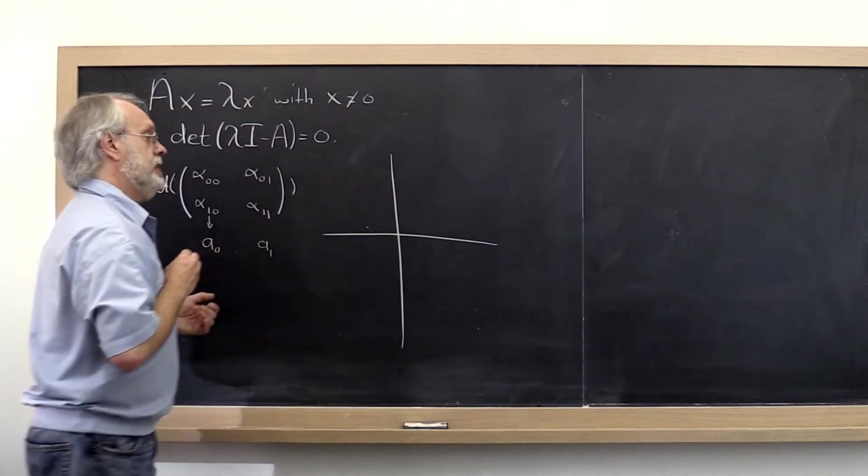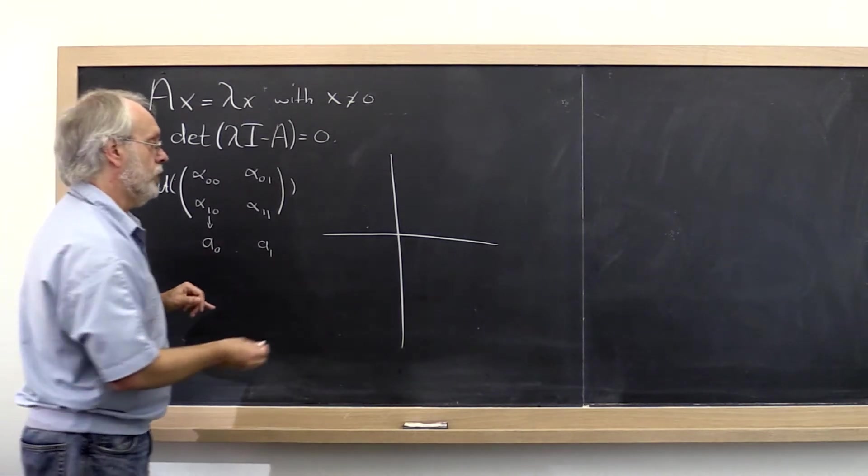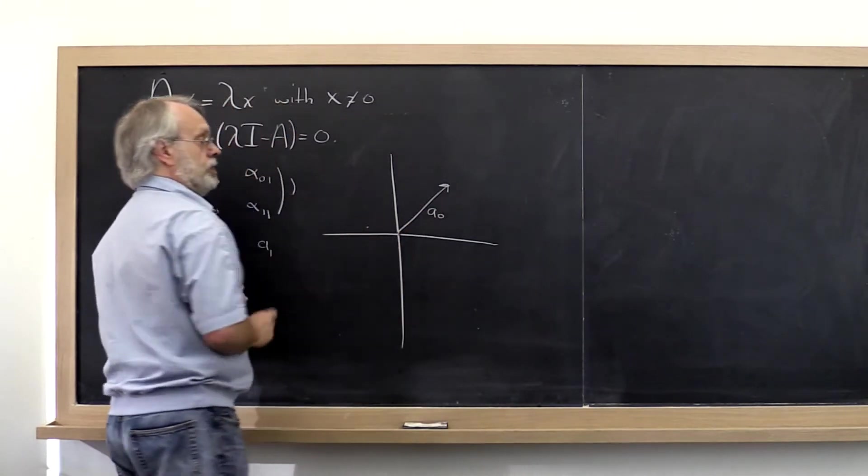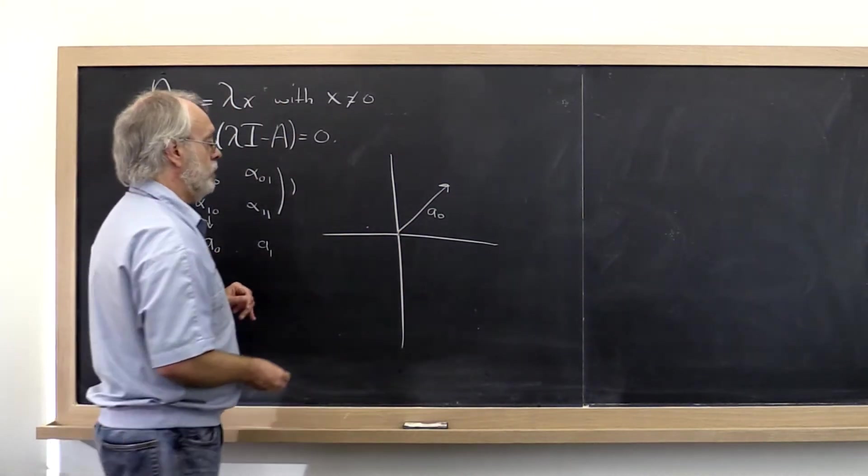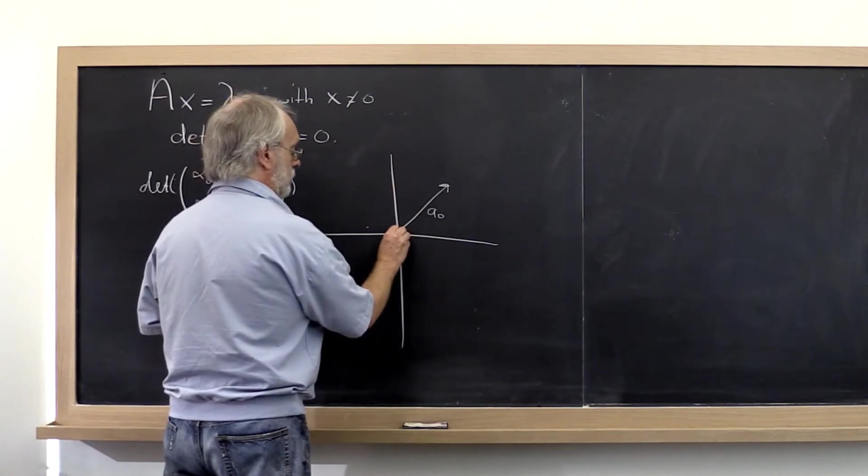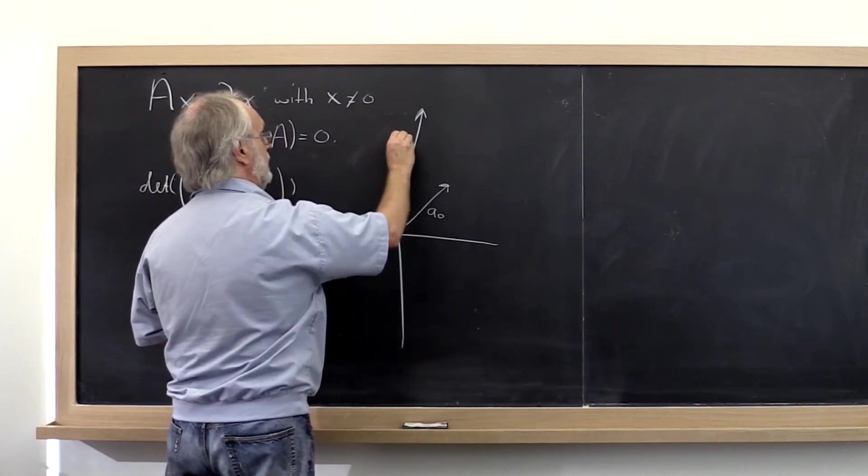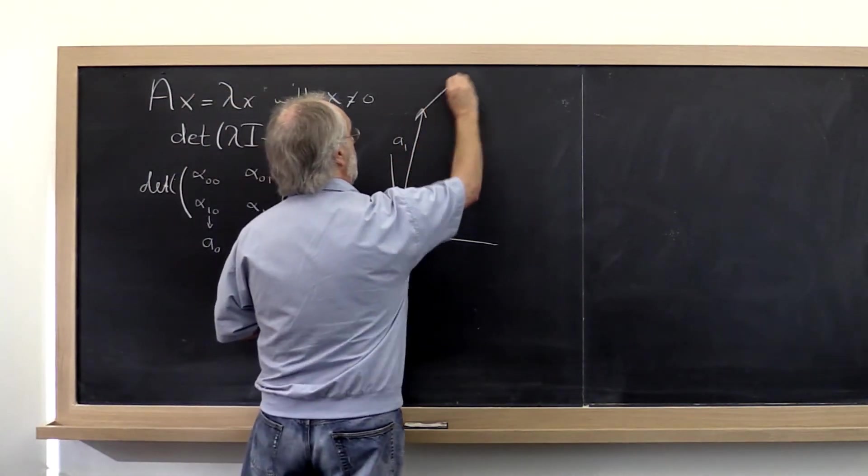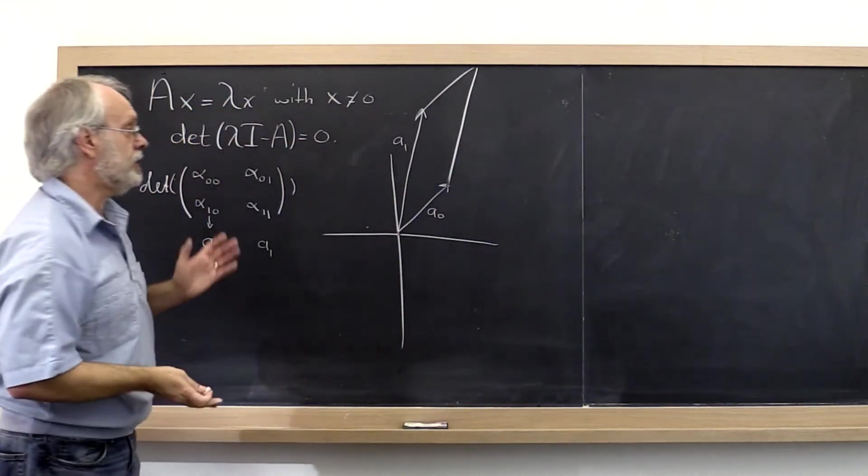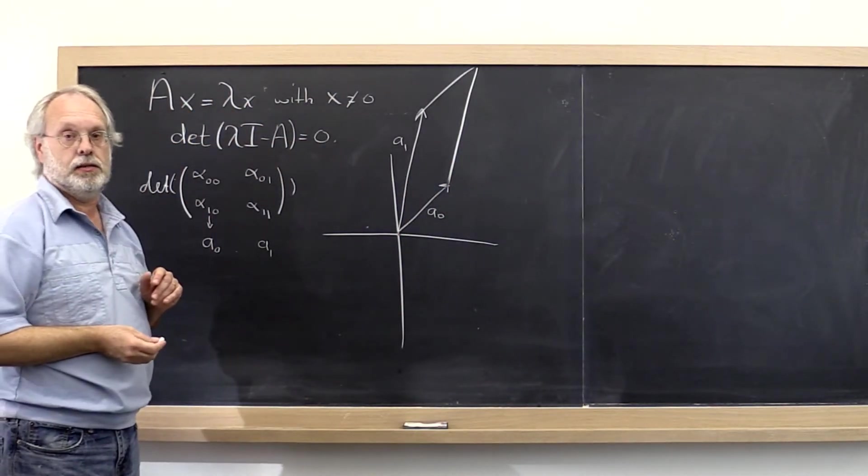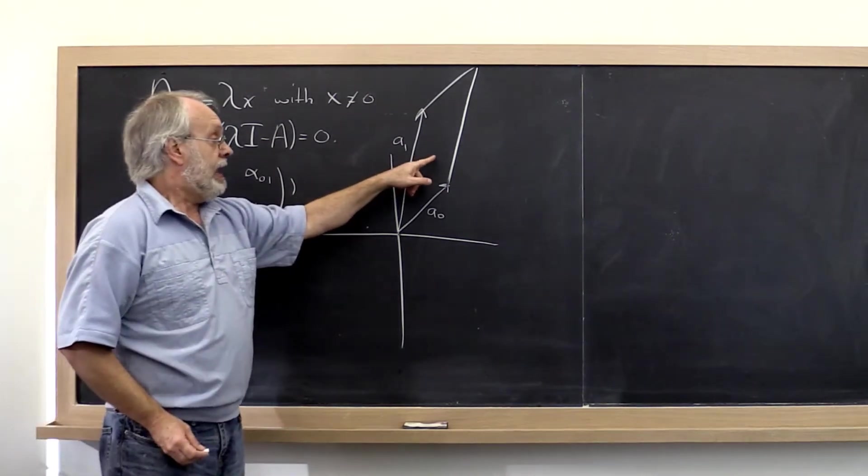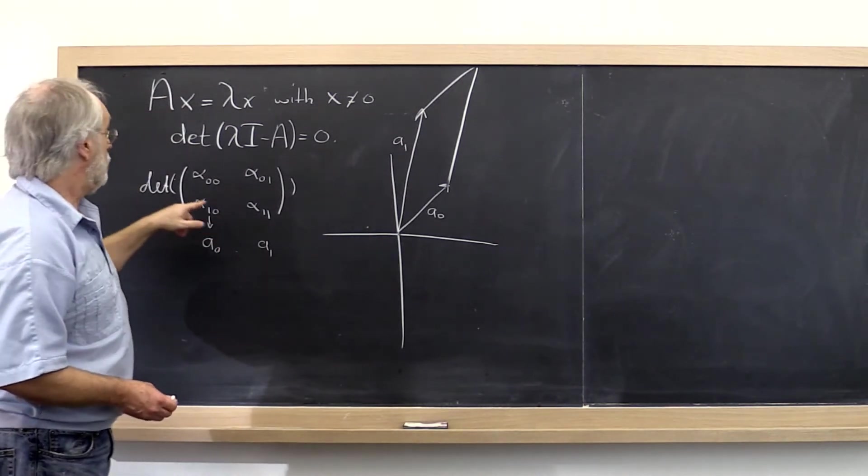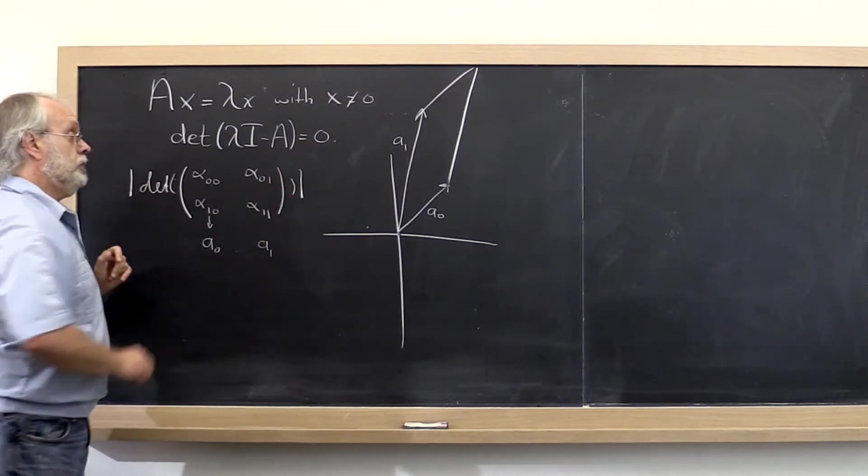If you take your vector A0 and root it at the origin, and you take the vector A1 and do the same thing there, and then you look at the parallelogram that has those vectors as its sides, then the area of the parallelogram is actually equal to the absolute value of the determinant.